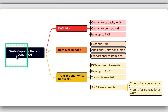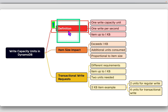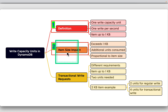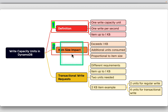Next, write capacity units in DynamoDB. A single write capacity unit is defined as the ability to perform one write per second for an item up to one kilobyte in size. If the item being written exceeds one kilobyte, additional write capacity units are consumed proportionally. Remember: for reads the limit is 4KB, but for writes it is 1KB.